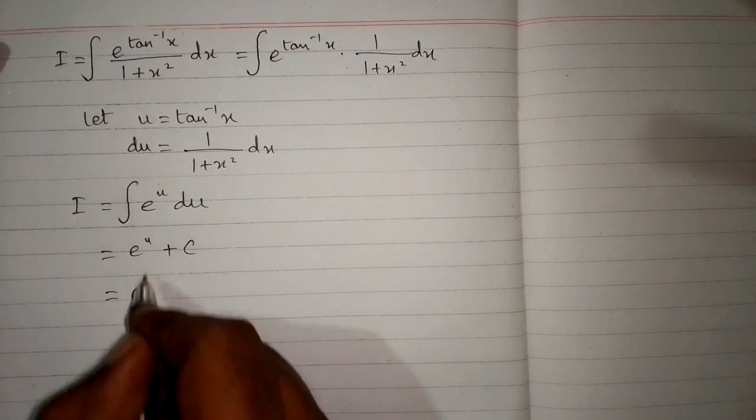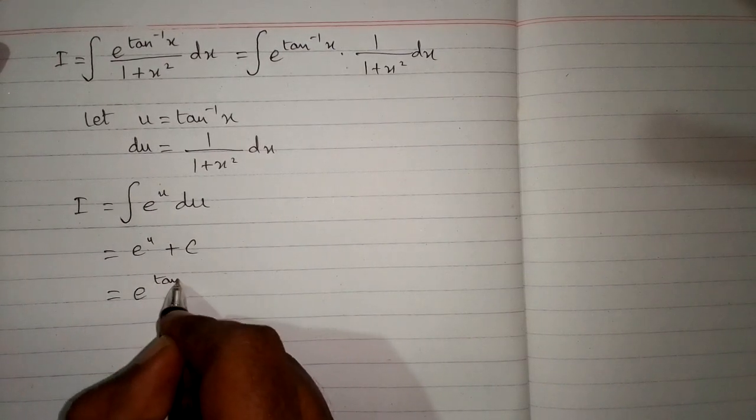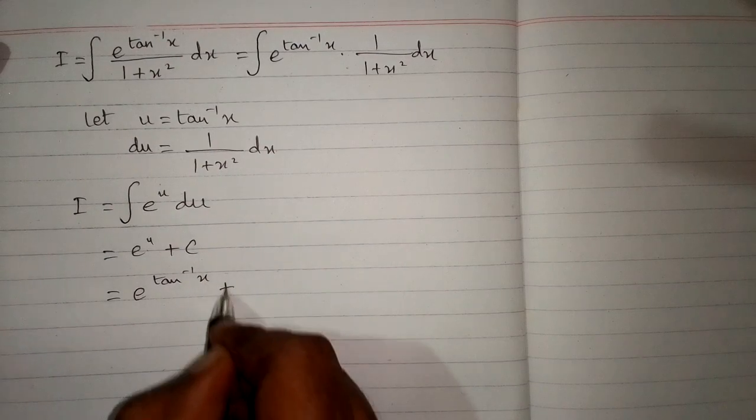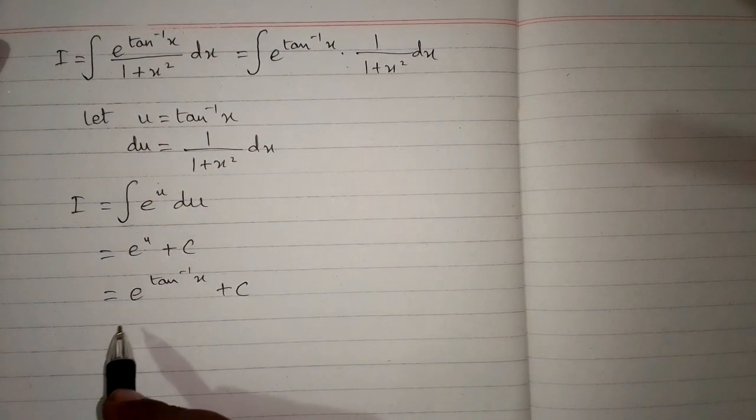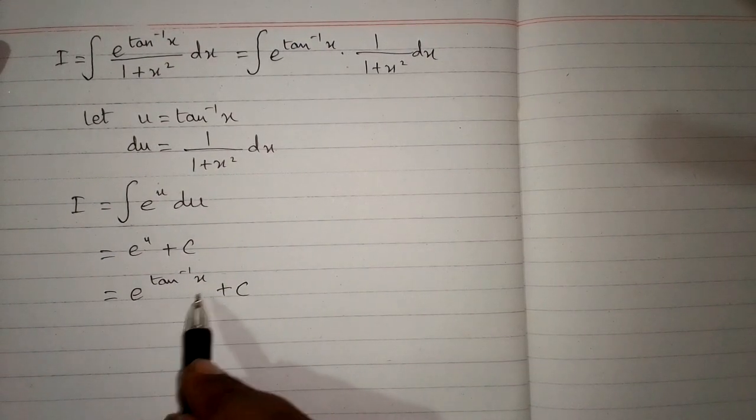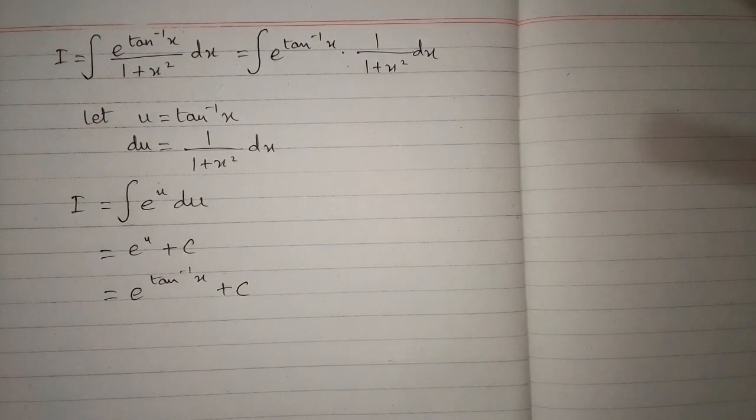Then we substitute back the value of u, which is tan inverse x. So the answer is e to the power tan inverse x plus c, where c is the constant of integration.